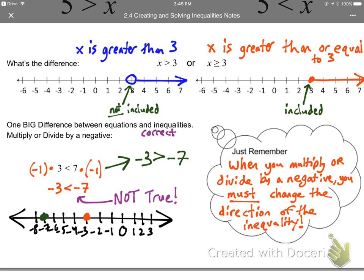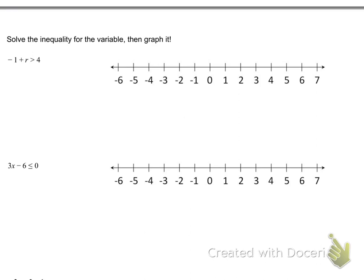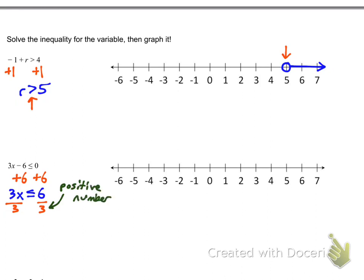Let's do some examples. First one: add 1 to both sides — r is greater than 5. No 'or equal to,' so leave an open circle and draw to the right. Second one: add 6 to both sides to get 3x is less than or equal to 6, then divide by 3. It's a positive number so we don't flip the sign. X is less than or equal to 2 — fill in a solid point at 2 and draw everything to the left.